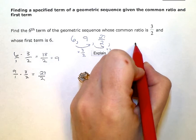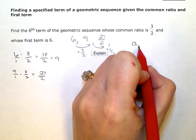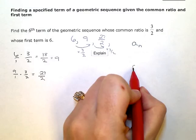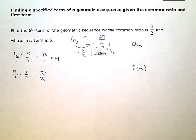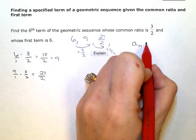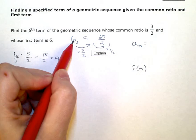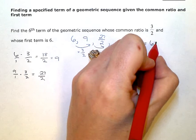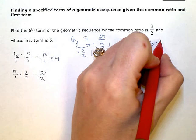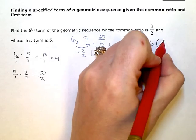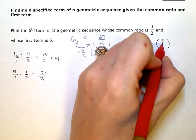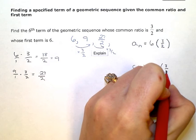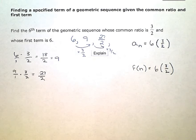So any term down the line, a sub n, or if I wanted to write this in function notation, it would be the value of any term, nth term down the line. A sub n will be the first term, so start with six, and then we're multiplying by, actually I'm going to put this in parentheses here since I have a fraction. Our pattern is multiply by three halves.